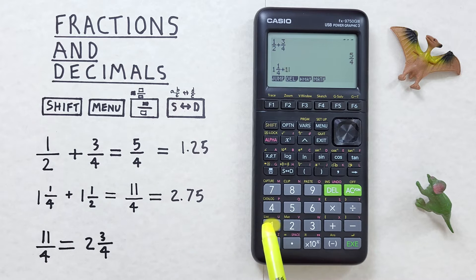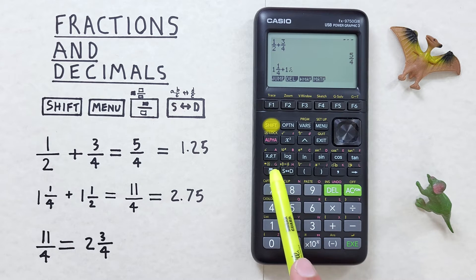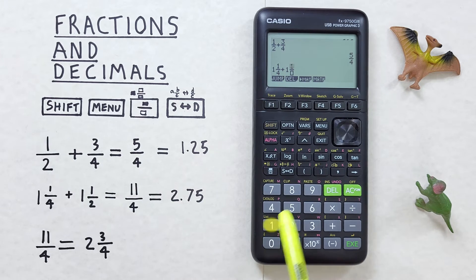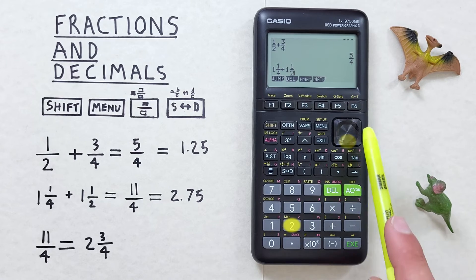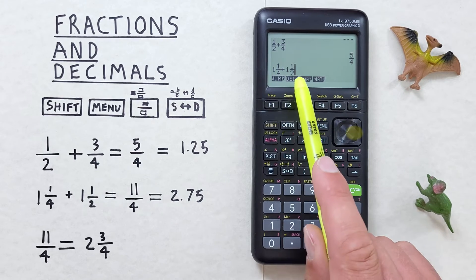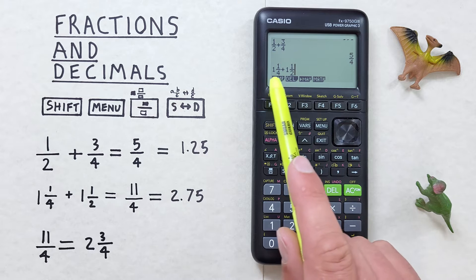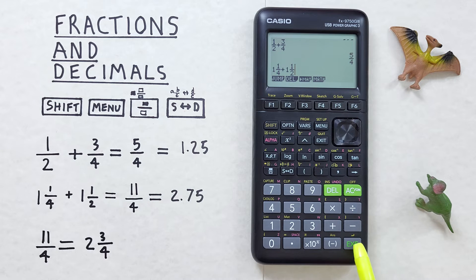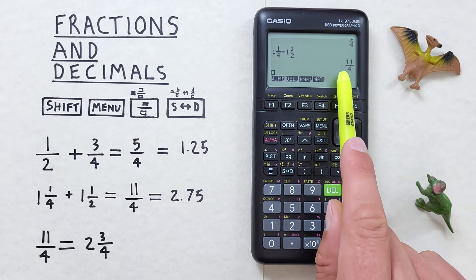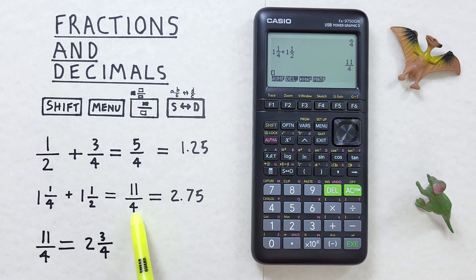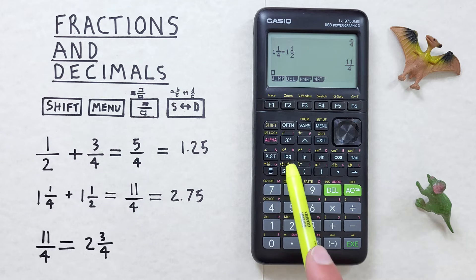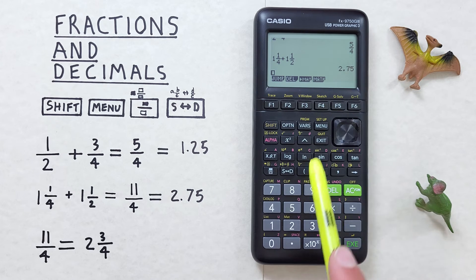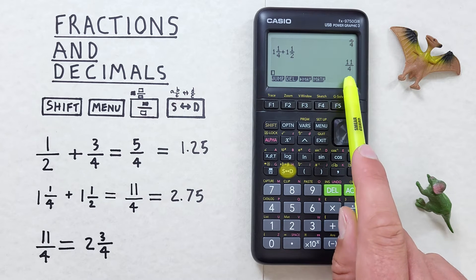So there's our 1 and then the shift fraction key again and then we enter our 1, scroll down 2, and then to the right to bring us out of the fraction box. There we go, we have 1 and 1 quarter plus 1 and 1 half and we press EXE and there we go we get 11 over 4. And if we want that as a decimal we can press the S to D key to convert our 11 over 4 to 2.75, and back to the fraction if we want of 11 over 4.